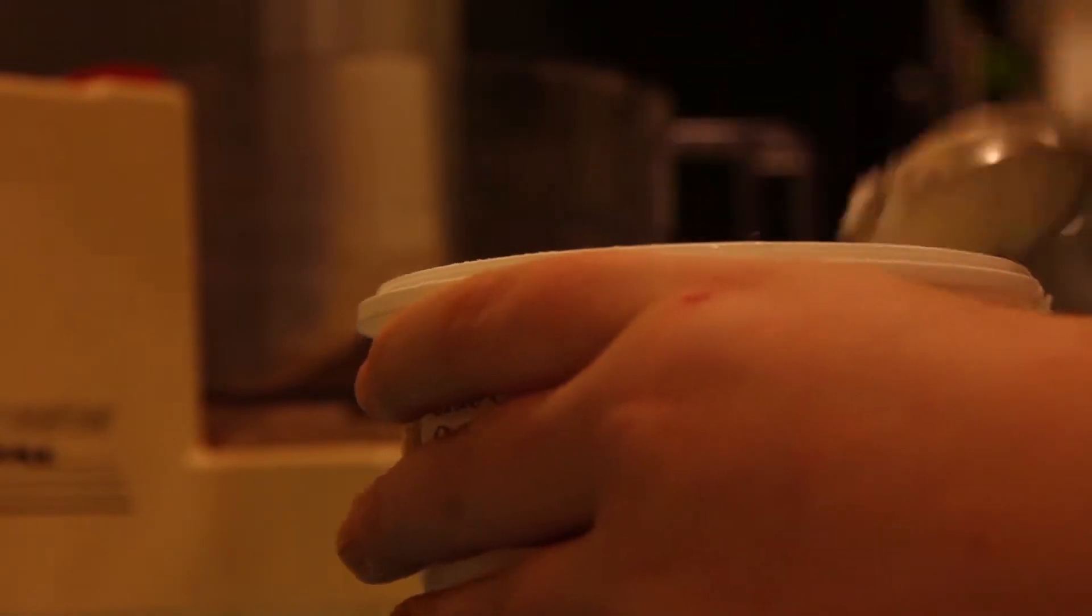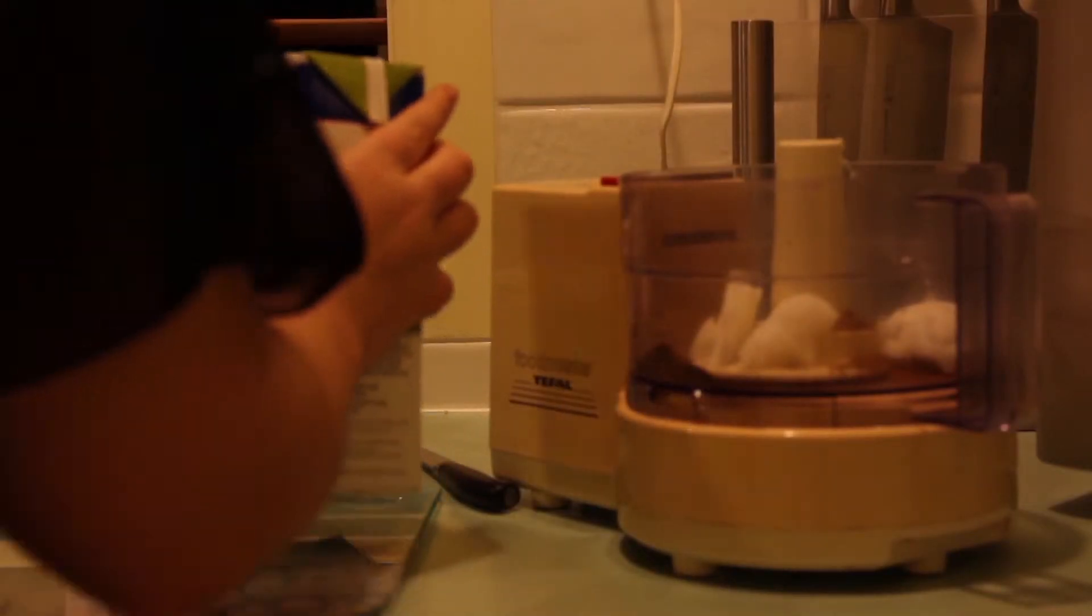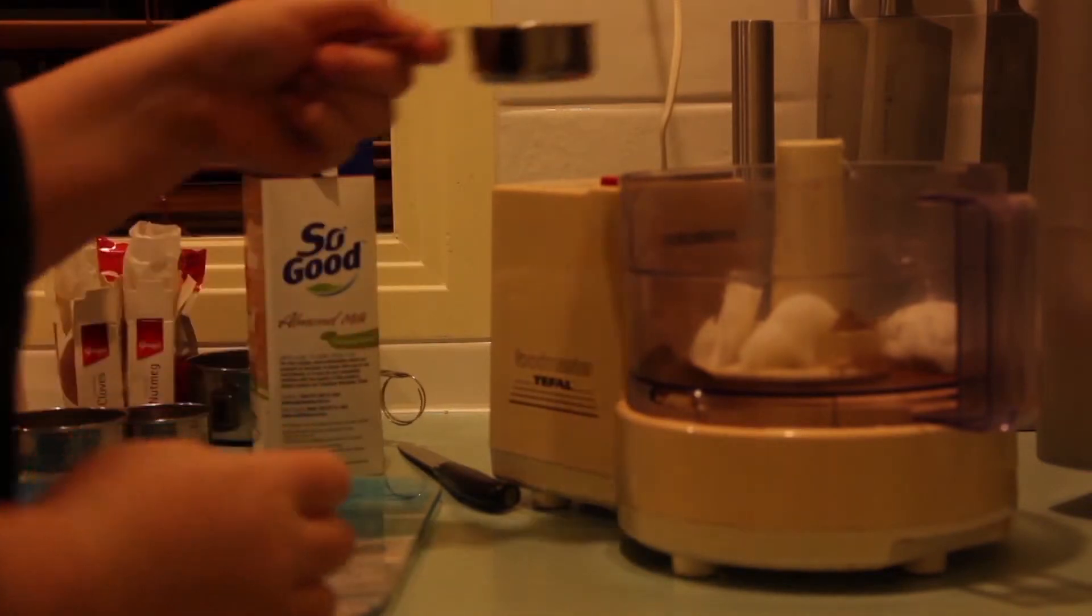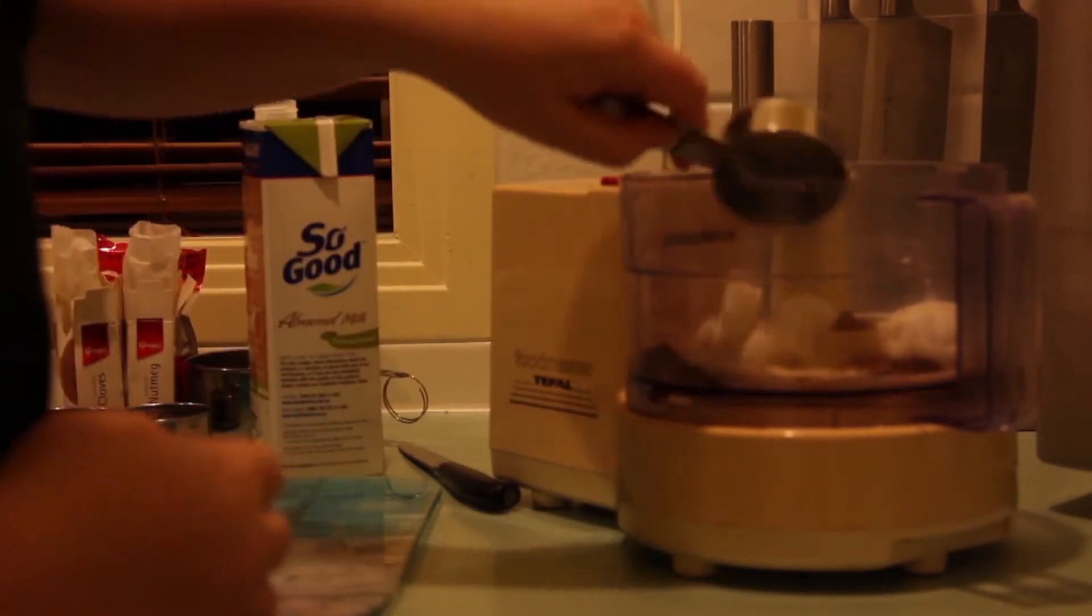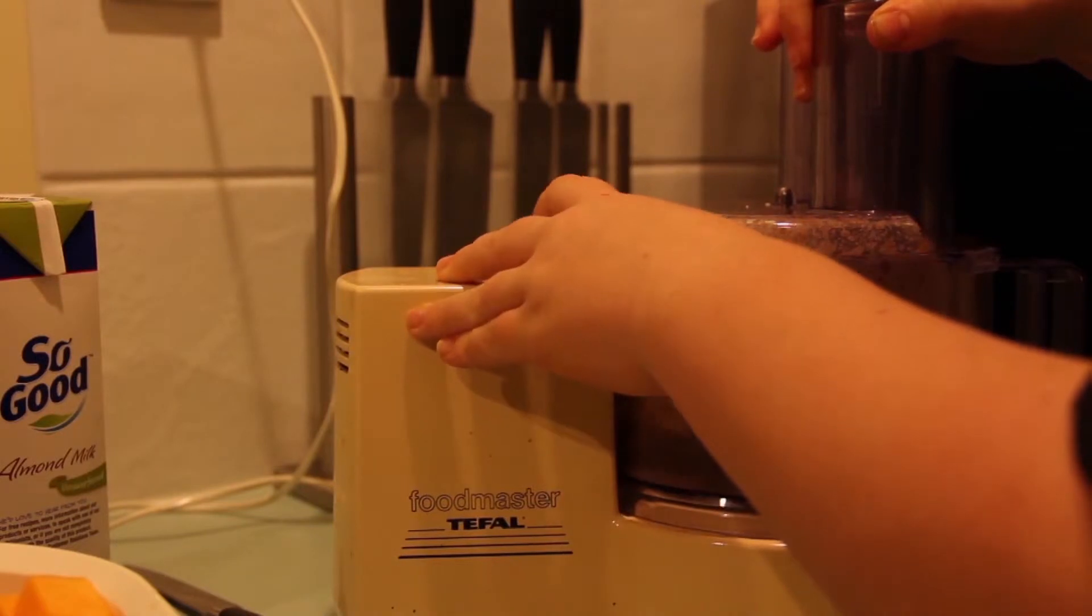Then you add three tablespoons of coconut oil, a quarter of a cup of unsweetened almond milk, and blend. Add the pumpkin incrementally so you don't break the food processor.